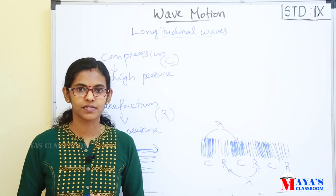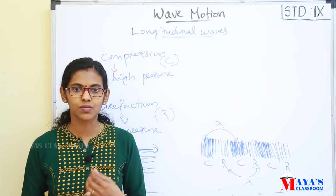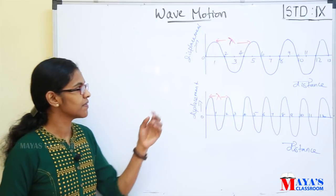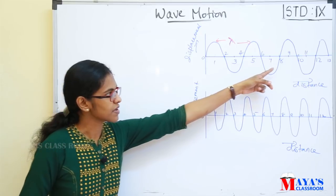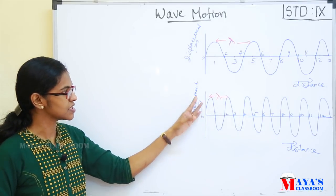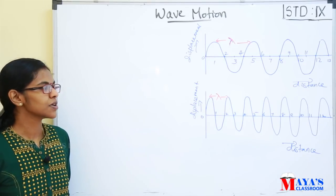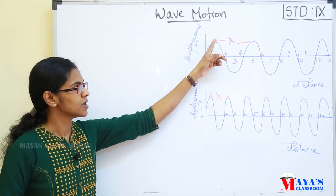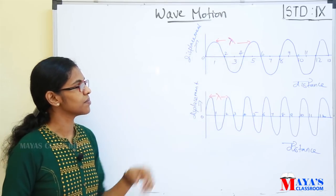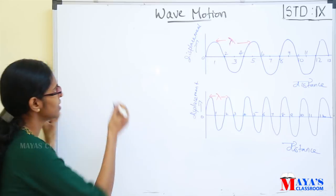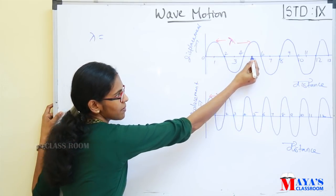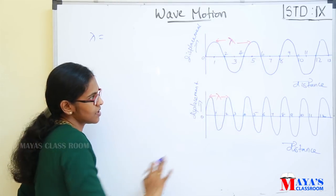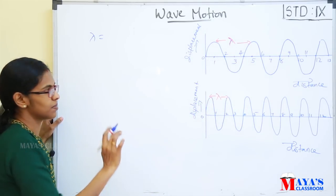How many displacements are between waves? The wavelength is the distance between two consecutive crests or troughs. In the first figure, wavelength: this is 1 and this is 5, so it is 5 minus 1, that is 4 — the wavelength is 4 meters in the first case. In the second figure, this is 2.5, so the wavelength is 2.5 minus 0.5 — that gives 2 meters.